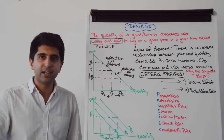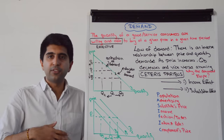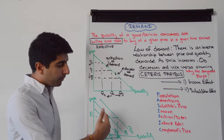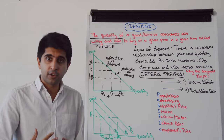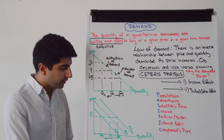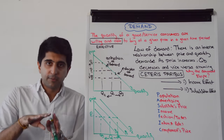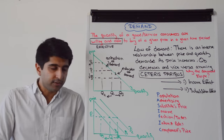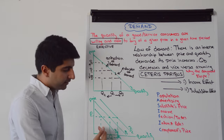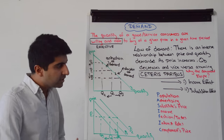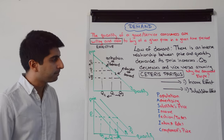Population can clearly affect demand. If there is a greater population, there will be more demand for a good or service — the demand curve shifts to the right from D1 to D2. Whereas if population decreases, there will be less demand, shifting from D1 to D3, independent of price.